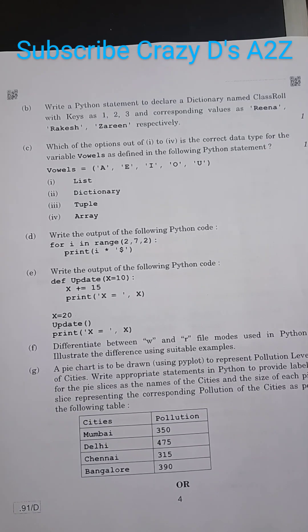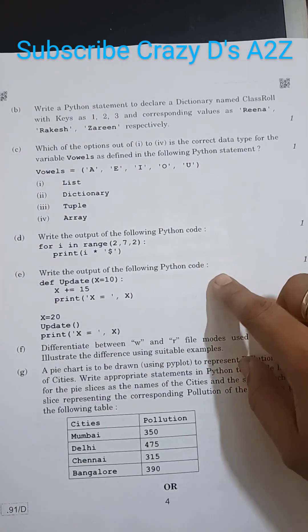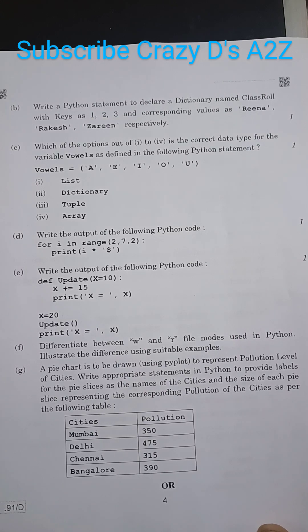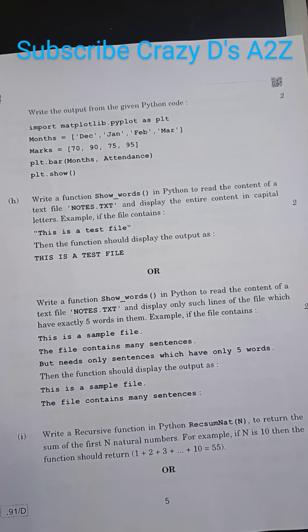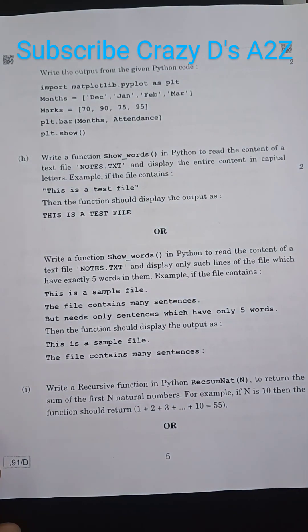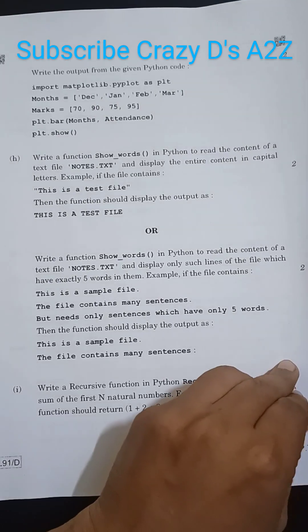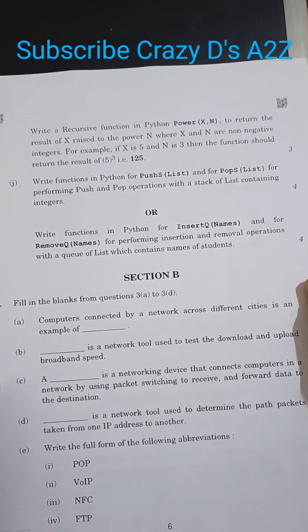Then comes question two: b part, c part, d part, e, f, and g. Then this is the h part of question two, and in h there is also an 'or' part present in this question paper. Then comes the j part with 'or' — that means here also an option is present.